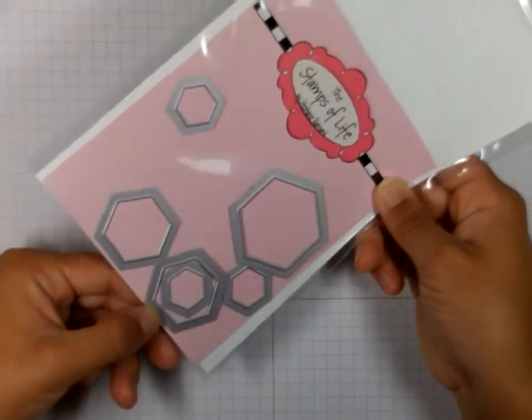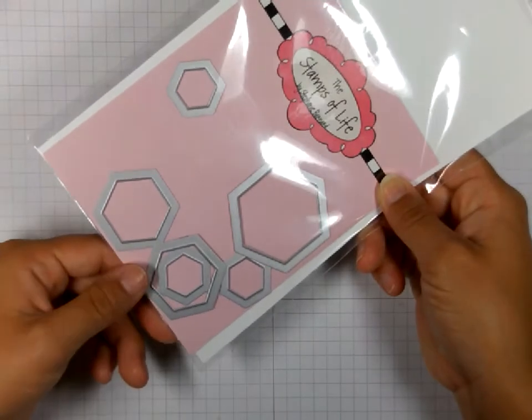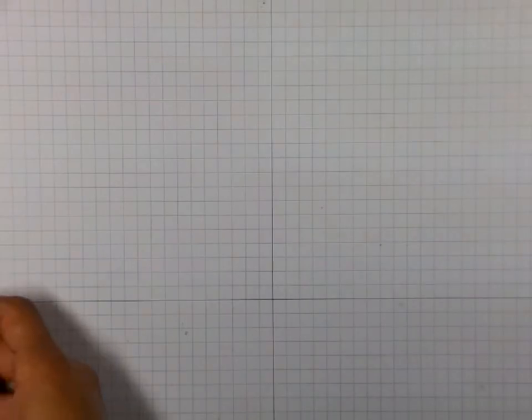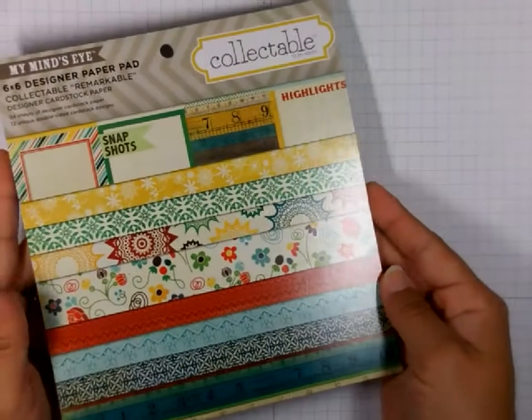To begin, we're going to start with the middle sized hexagon die. We're going to die cut from this pattern paper which is from My Mind's Eye and is called the Remarkable set.